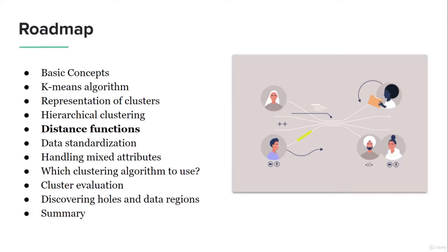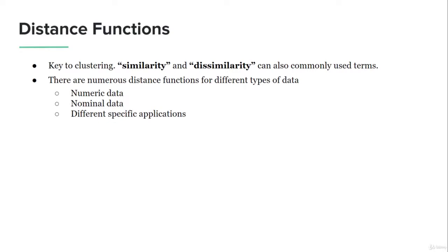Let's move on to studying different distance functions. The core fundamental aspect of clustering and unsupervised machine learning is measuring similarity, which is the intrinsic feature defining clusters and different data points. Both similarity and dissimilarity are quantified by measuring distance between data points. There are different types of distance functions, so let's look at them in more detail.